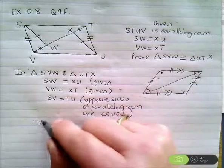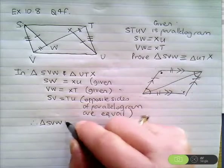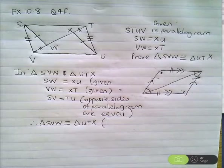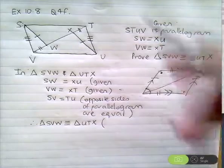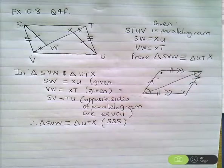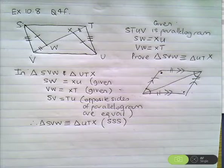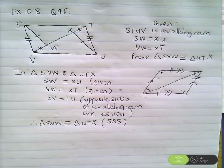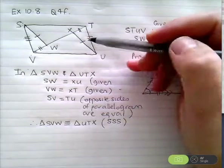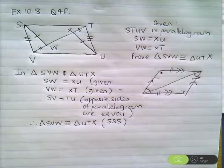Therefore, triangle SVW is congruent to triangle UTX. Reason? We've got SSS — you can see it marked. Notice as I do each thing, I put the marking on the diagram. That way it becomes like exercise 10.7 — you can see that you've got SSS. As you do each piece of information, please mark it on the diagram. Then it becomes very much a visual exercise for you.